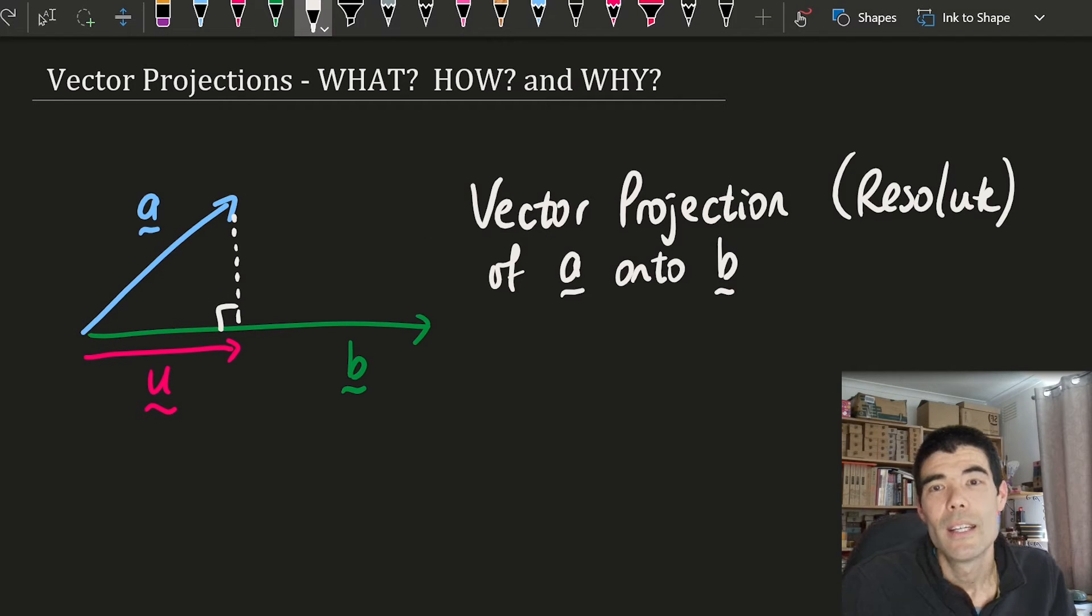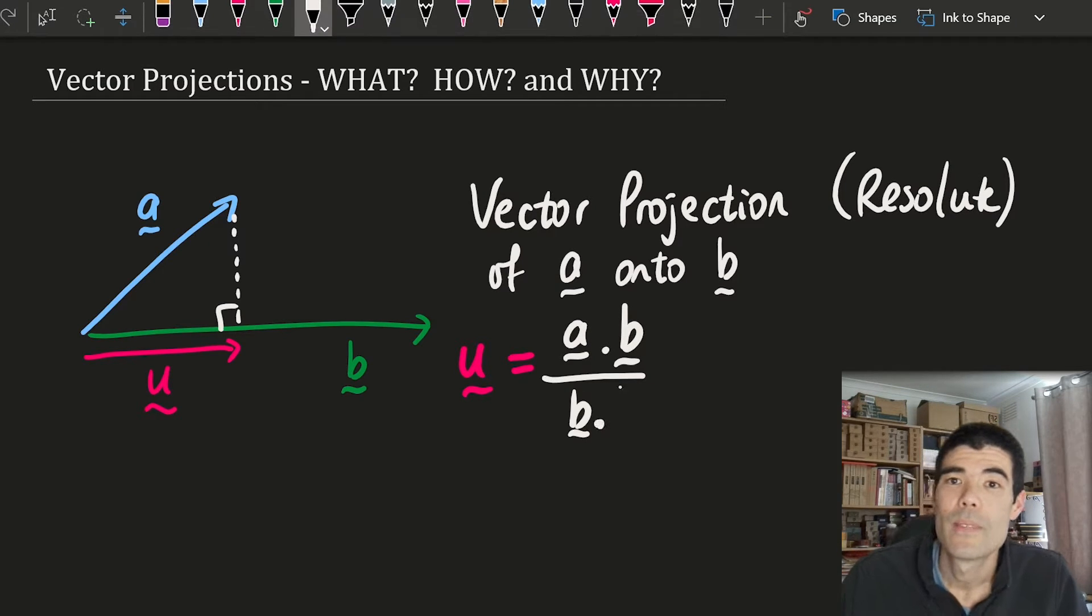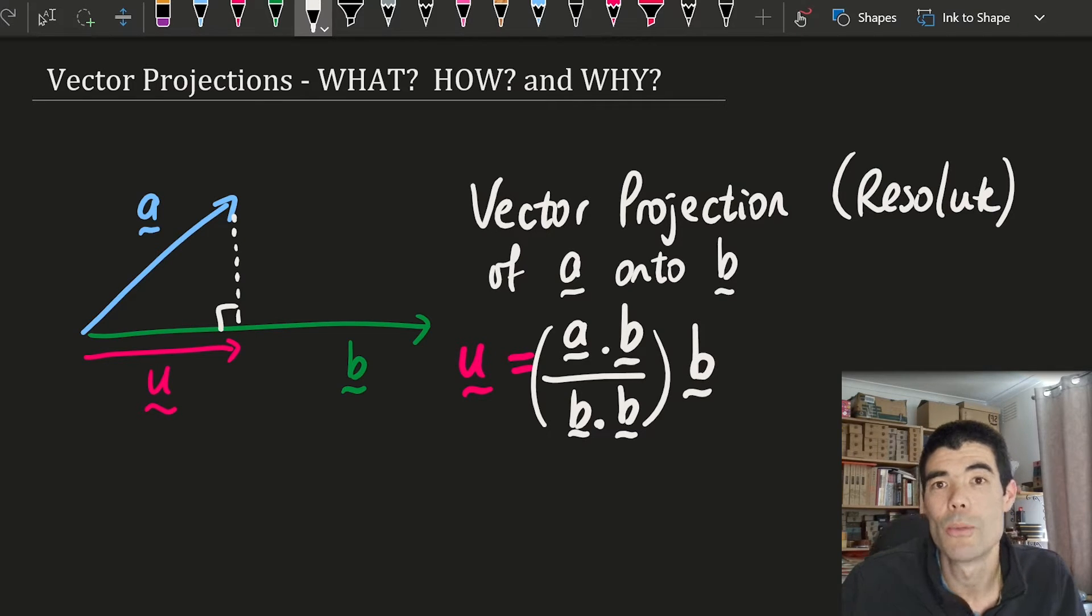So the formula, which is not on your formula sheet unfortunately, is a dot b over b dot b times the vector b. There's two forms which are equivalent. The other form is the dot product of a and the unit vector of b times the unit vector of b.